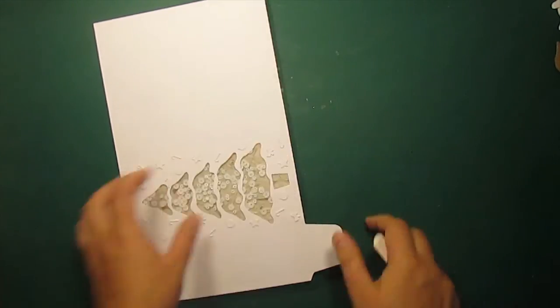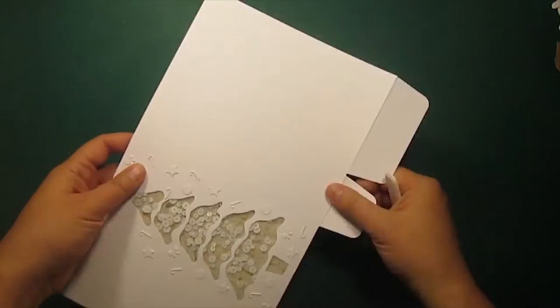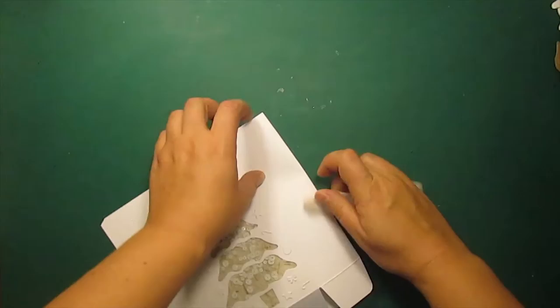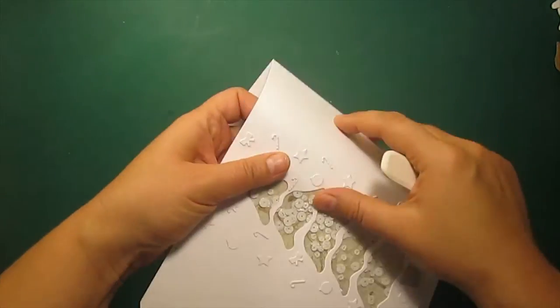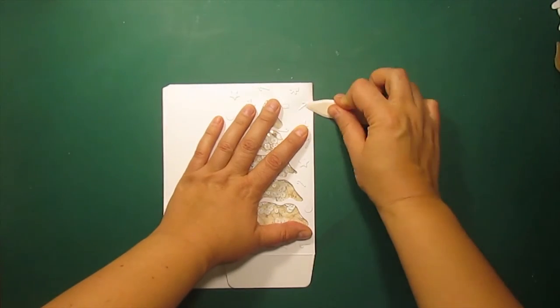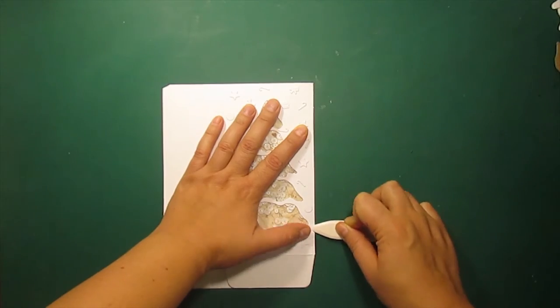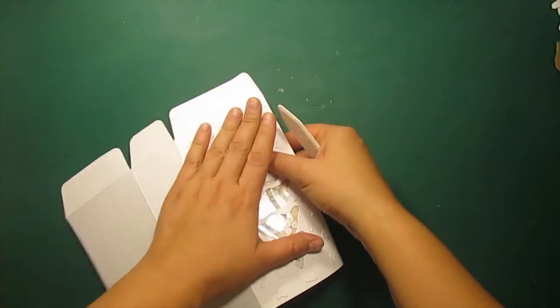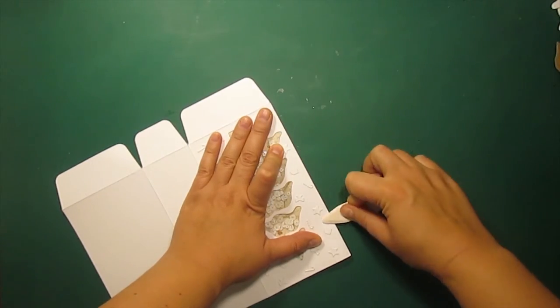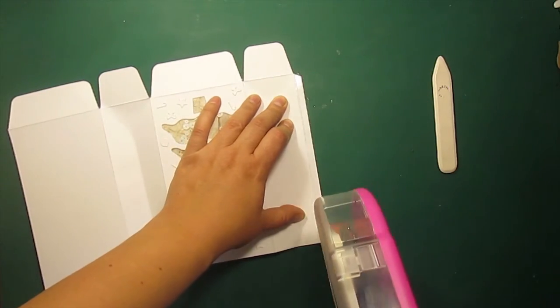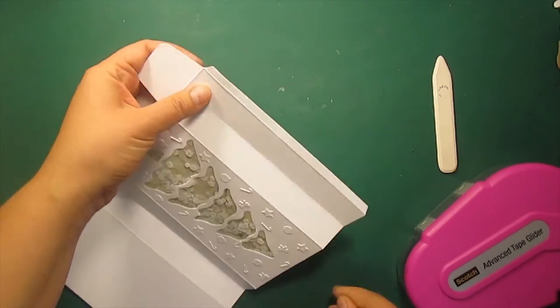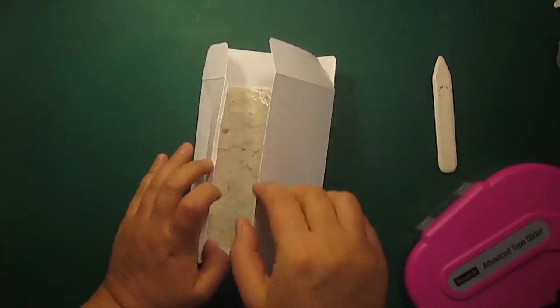Now I'm going to assemble the bag. First I have to fold all the scored lines. Then I'm applying adhesive to the vertical flap and sticking it down like this.